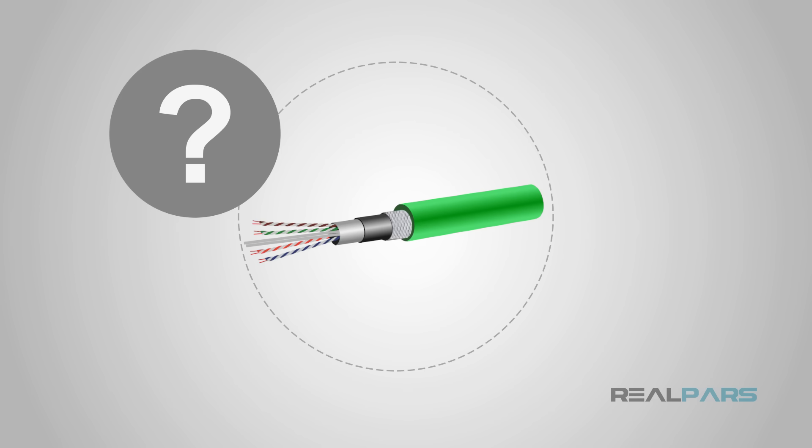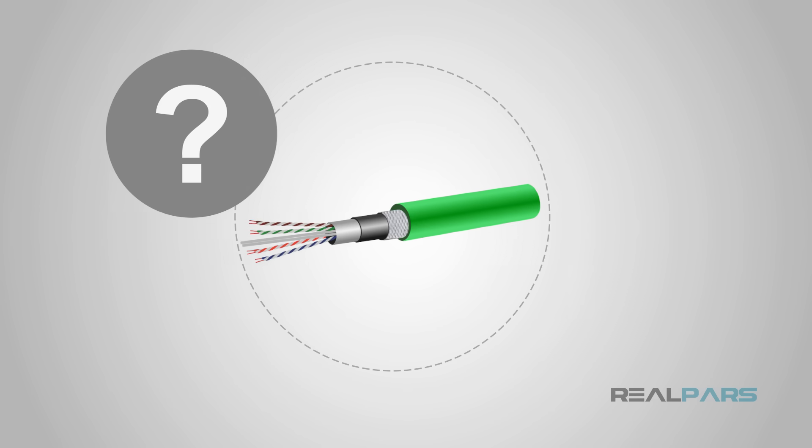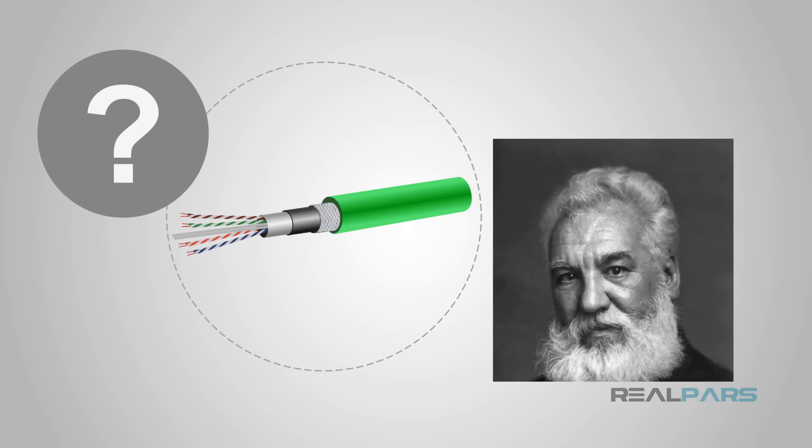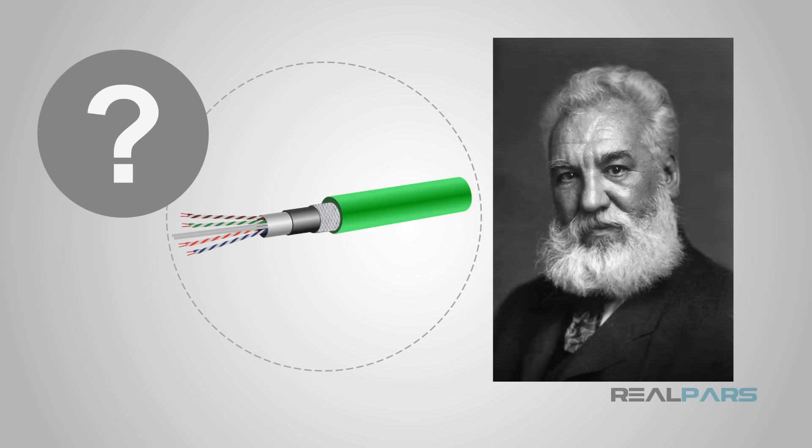Let's break for a trivia question. Who invented twisted pair wiring? Alexander Graham Bell invented twisted pair wiring in 1881.